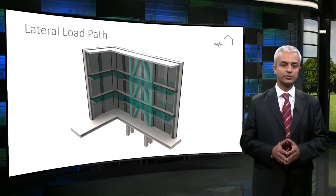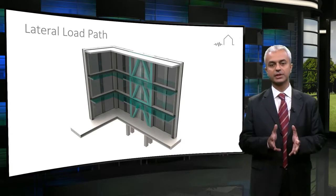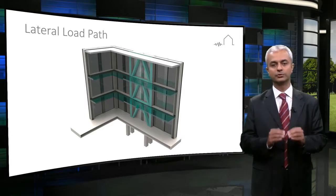Seismic effects are considered to act both along the horizontal and vertical directions. In regular structures, the most harmful effects occur for the horizontal component of the ground motion.